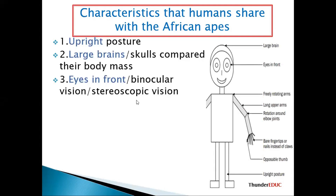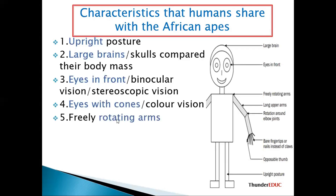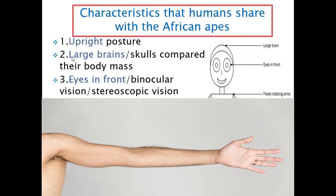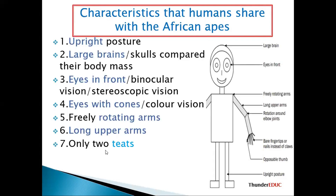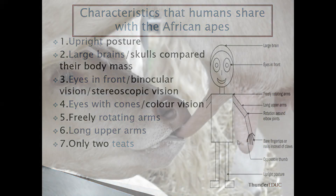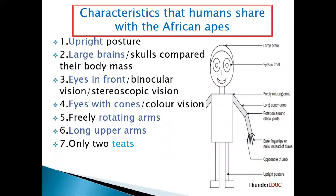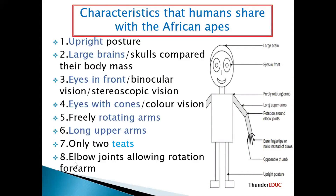Eyes in front — so that we can see clearly and easily. We also have color vision; dogs cannot see color, but humans and primates can. Free-rotating arms — we can rotate them widely. Long upper arms. Two mammary glands — humans and other primates like chimpanzees and gorillas have two, whereas a cow has more than two. Elbow joints that allow rotation.